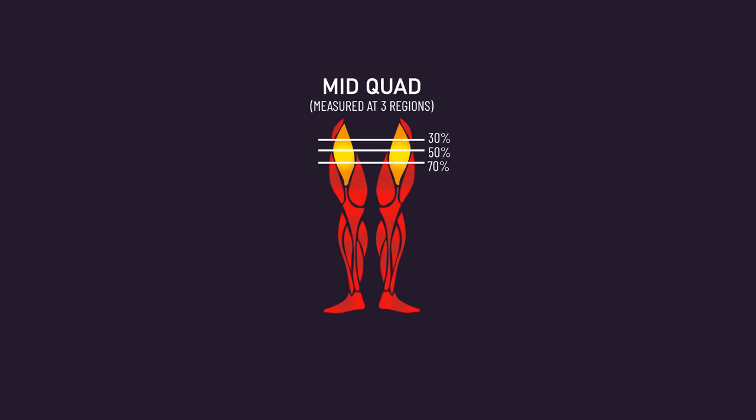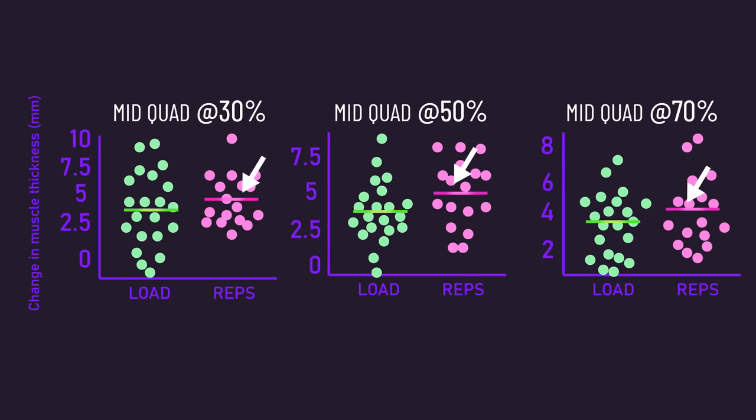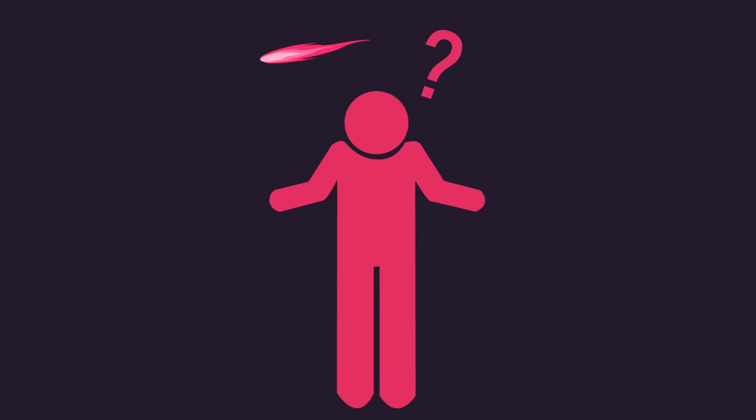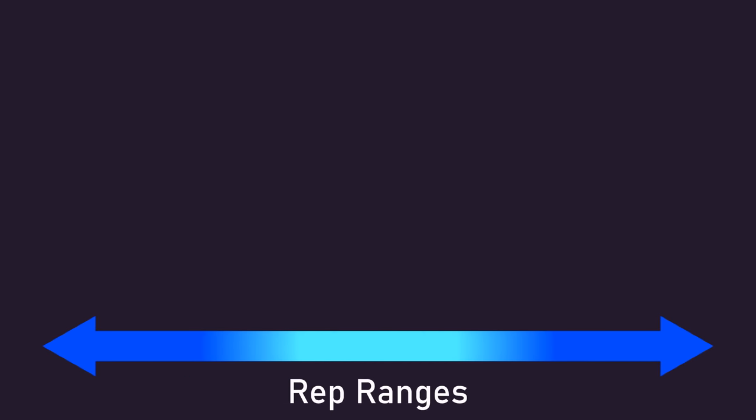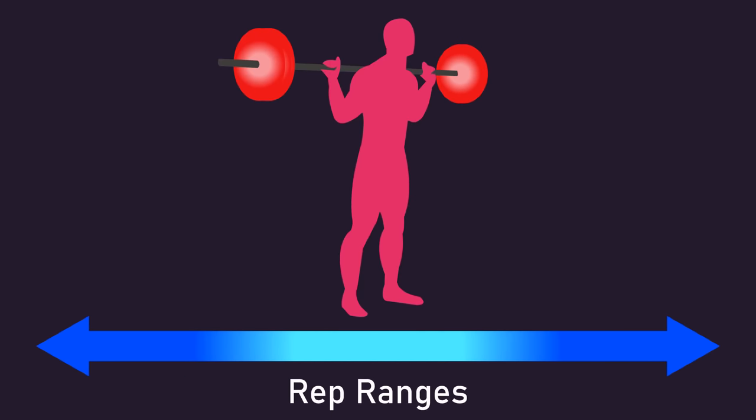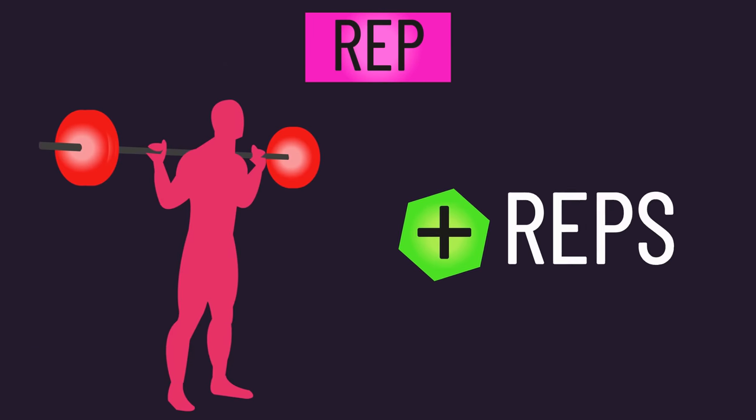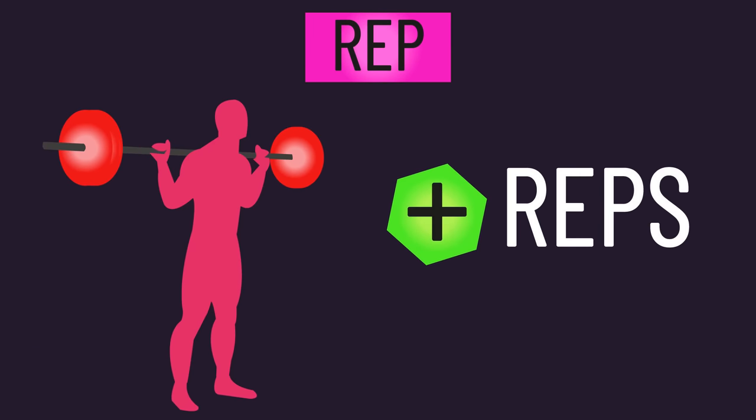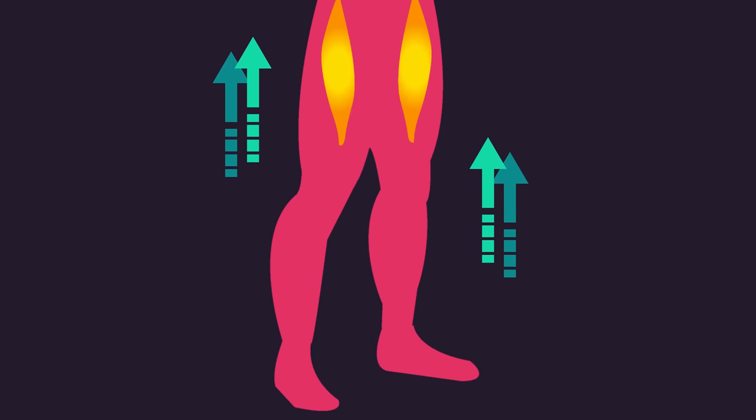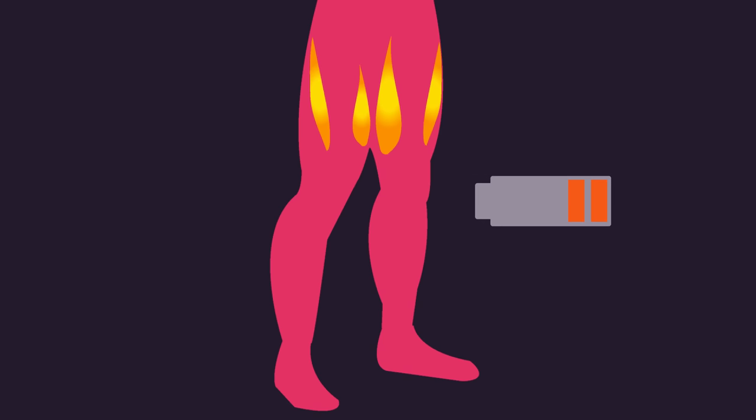We noted mid-quad growth slightly favored rep progression versus load progression. It's not clear why this is, but the researchers speculated rep ranges on the squat may have something to do with this. The rep group trained with higher reps on the squat in the later portion of the study, and higher reps on the squat may enhance rectus femoris recruitment, a large part of the mid-quads, due to accumulated fatigue in the other vastly quad muscles.